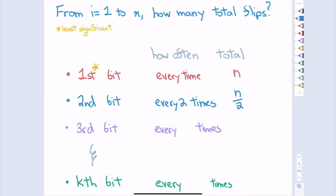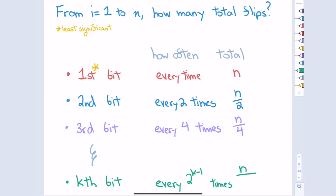What about the third bit? I find myself flipping it every four times — not three, because it's going up by powers of two. So I flip it a total of N over 4 times. You probably see the pattern. The k-th bit flips how often? One out of every two to the k minus one times. So as I count from one to N, I flip the k-th bit N over 2^(k-1) times.